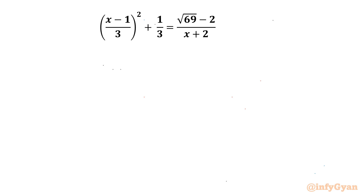Welcome back to Infigyan, my dear friends. In this video we have one very interesting and challenging rational equation: (x minus 1 over 3) whole squared plus 1 over 3, equal to the square root of 69 minus 2 over (x plus 2). We are going to find real solutions only.